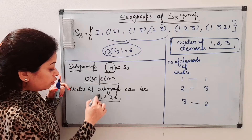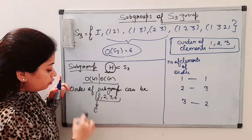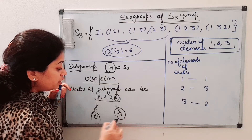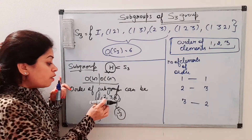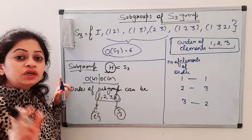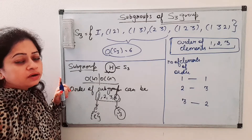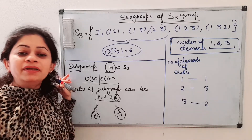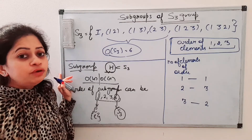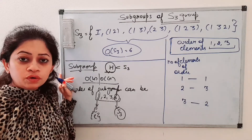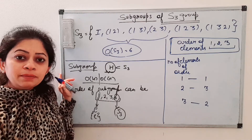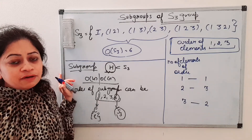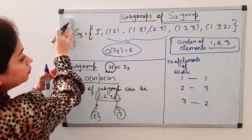Now for the short trick: a subgroup of order one contains only the identity, and a subgroup of order six is S3 itself. When we talk about a subgroup of order two — this is a very important short trick — two is a prime number. This applies whenever you are finding subgroups of prime order, whether in Dn, Un, or any group. If the order of a subgroup is prime, then that subgroup is cyclic.